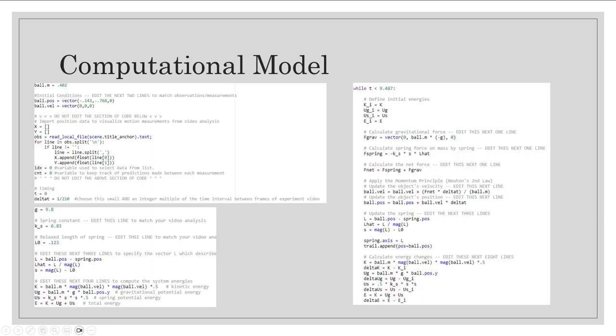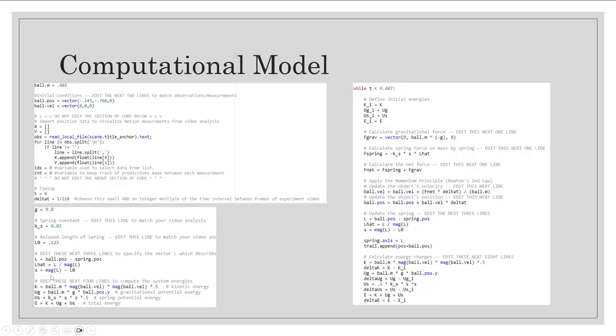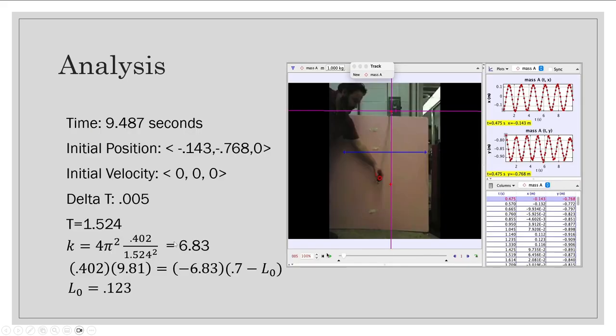Here is our computational model using Glow Script. We had to change the ball mass and the initial position for the values we found earlier. Then I inserted gravity and the spring constant here that we found from using this equation, and the L0 from using this equation. With that, we got to find L and L-hat, which would give us our s value.